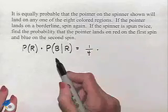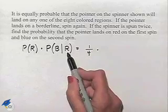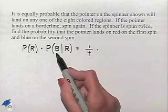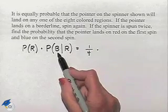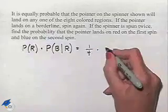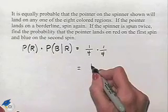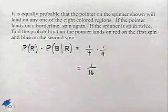Times the probability that it lands on blue given that it landed on red the first time. The fact that it landed on red does not affect the probability of it being blue. So therefore, we're still going to have two out of eight or one fourth for that probability. And now we simply multiply our fractions together to give us the probability of one sixteenth.